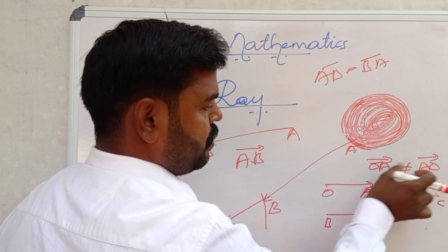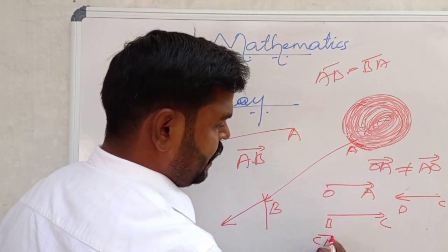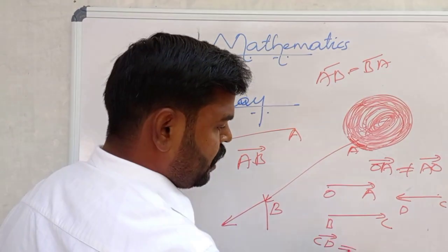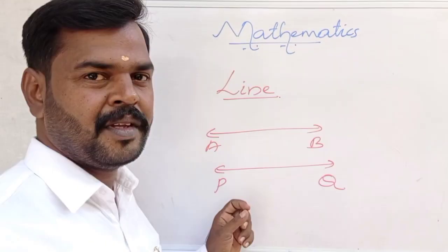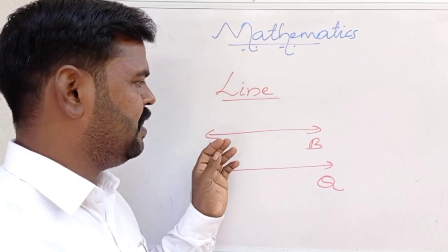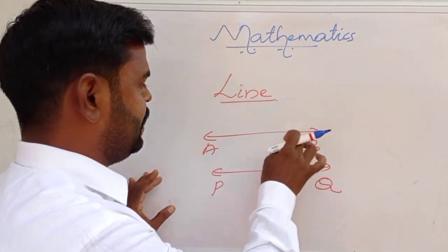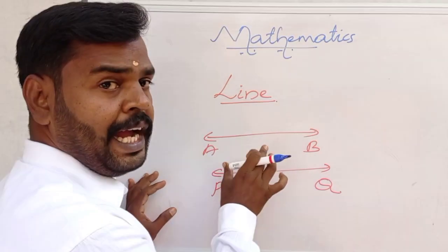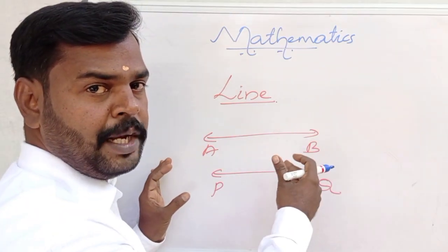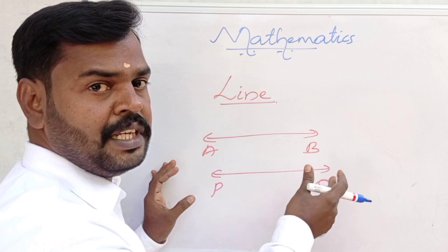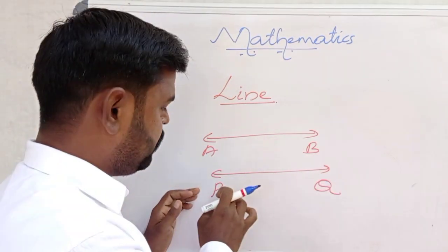Ray CD is not equal to ray DC. Now let us discuss line. A line is nothing but two sides extending — here B is extending, and A is also extending. So a line has no endpoints. Two sides are extending, meaning no finite length — it has infinite length. Similarly, line PQ: Q is extending, P is also extending.